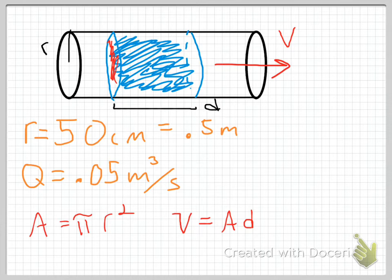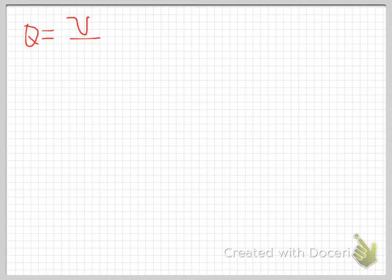The volume equals A times d, and I've set that equal to 0.05 cubic meters. So, if I can figure out this distance d — the distance through which the front face moves in one second — I can determine the fluid velocity.